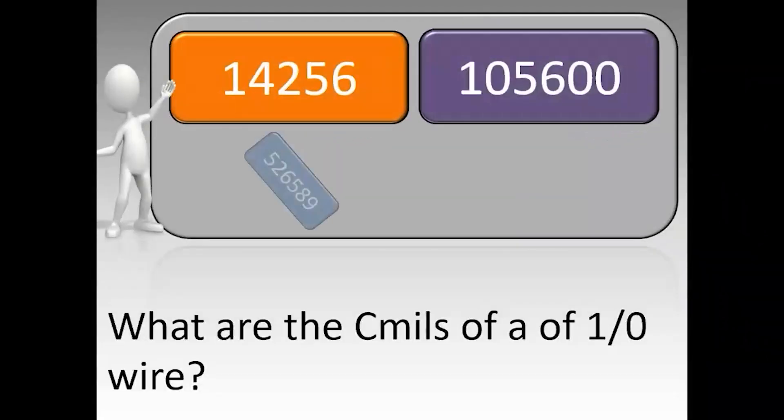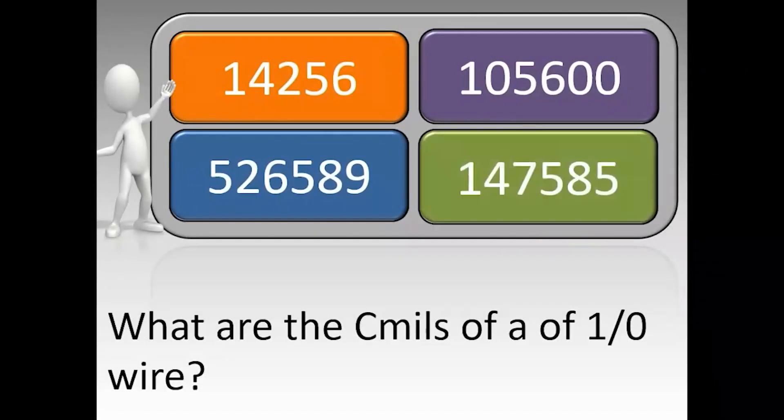What are the circular mills of a one-odd wire? The correct answer is 105,600.